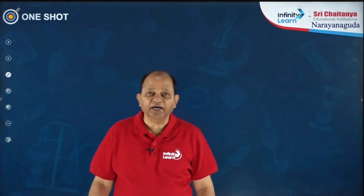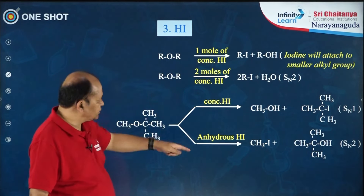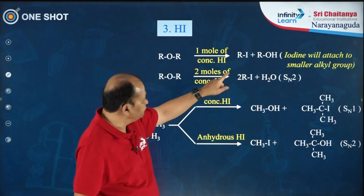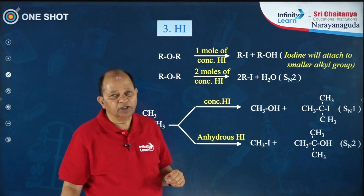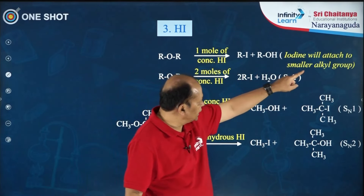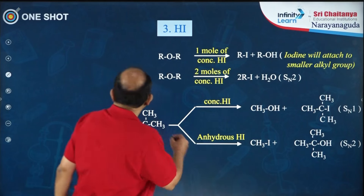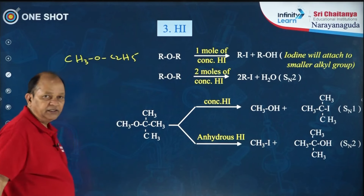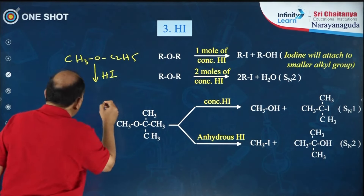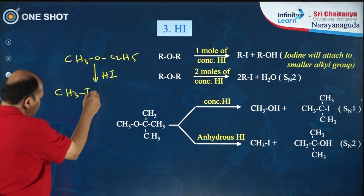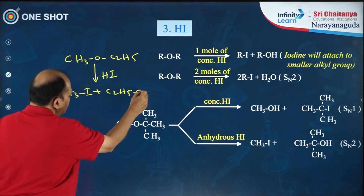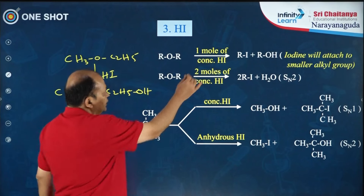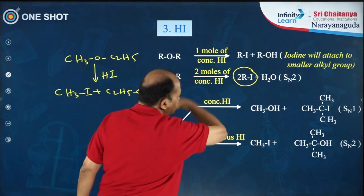The next reagent is hydrogen iodide. Here are some important reactions: ethers react with one mole of HI to form alkyl iodide and alcohol. The important point to note is that iodine will attach to the smaller alkyl group. For example, methoxyethane treated with HI gives methyl iodide plus ethyl alcohol. If you treat with two moles, the product is alkyl iodide only.